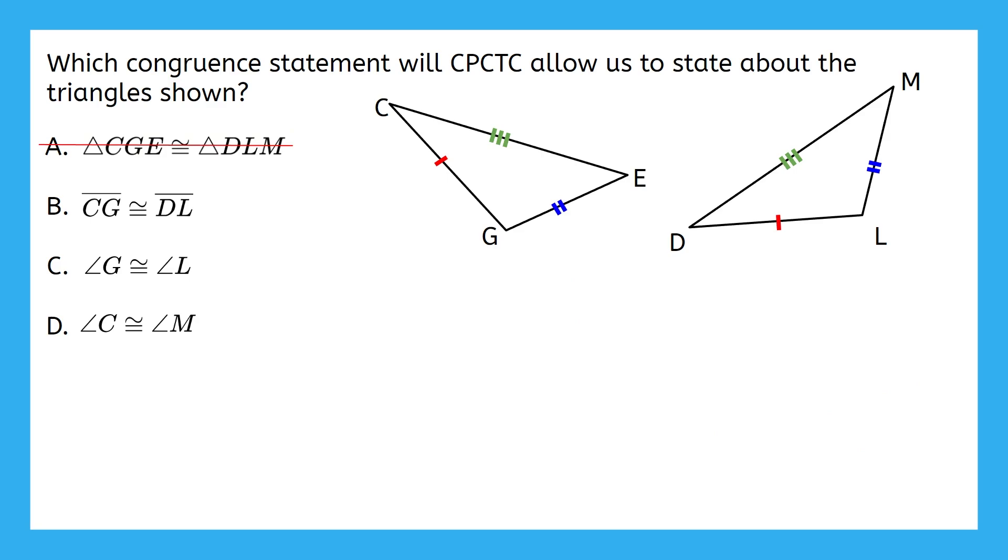Next is part B. It says segment CG and DL are congruent. We were already told that just by looking at the markings on the picture. We didn't need CPCTC to state this. It was given to us. So, this is also not our answer.